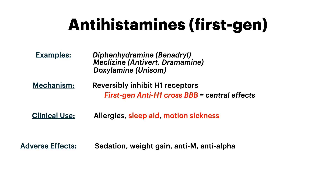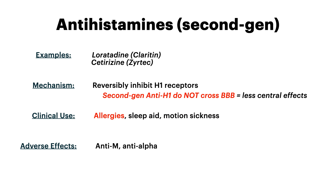Adverse effects for the first generations are sedation, weight gain, and some anti-muscarinic and anti-alpha-adrenergic properties. Comparing to second generations: second generations do not cross the blood-brain barrier, so there are no central effects. The second generation antihistamines are less likely to cause sleepiness and sedation, and they don't really help with motion sickness, nausea, and vomiting because they can't penetrate into the brain. The examples are loratadine and cetirizine. Because these have peripherally acting antihistamine effects, true allergies are better treated by second generation antihistamines, all because of the blood-brain barrier.